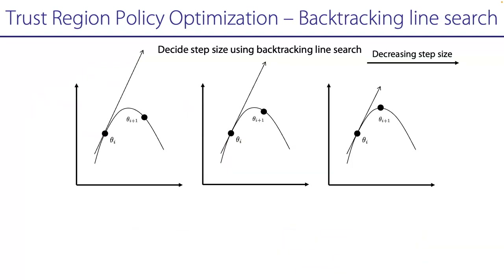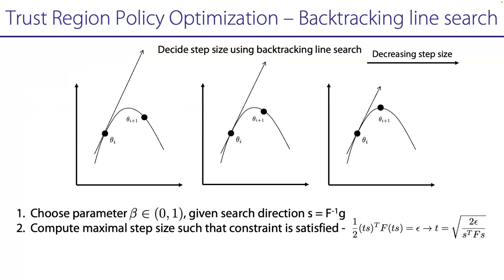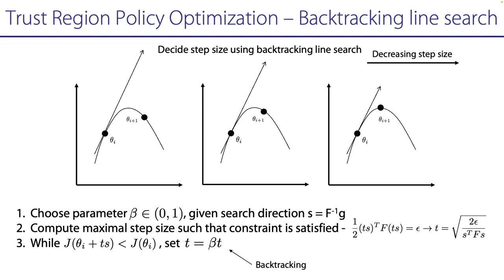The second idea is backtracking line search for step size selection. Once you have a search direction from conjugate gradient, you start with a large step size — the biggest such that the KL divergence constraint is satisfied — and then backtrack: choose beta less than one and keep reducing step size until the objective increases. You start with a large over-approximation of the step size and keep going back until the objective improves. The key ideas in TRPO are: conjugate gradient to avoid inverting F, then backtracking line search to choose the step size.